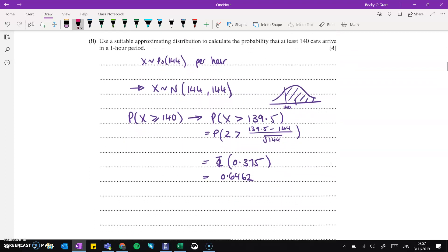Then an approximating distribution for at least 140 cars in a one-hour period, we are using the normal distribution to approximate our Poisson distribution. We need to apply a continuity correction because we're going from a discrete to a continuous distribution. So we want 140 included. To go to the right of 140 and still include it, we would take that half off and we get 139.5. Then we work through the normal distribution and we get our answer of 0.6462.